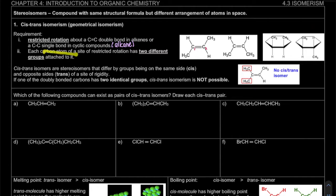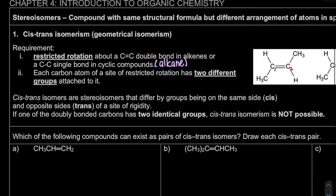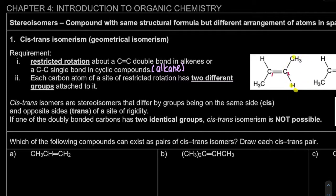The second requirement is that each carbon atom at the site of restricted rotation must have two different groups attached to it. For example, on carbon 1 of the C=C double bond, it has hydrogen and CH3 — two different groups, so it can exhibit cis-trans isomerism. On carbon 2, it also has CH3 and hydrogen — two different groups. So this molecule exhibits cis-trans isomerism.